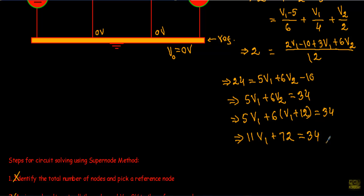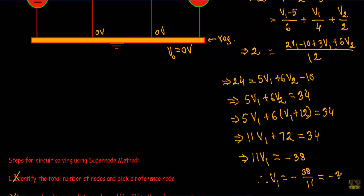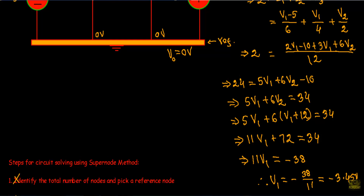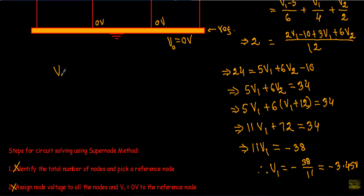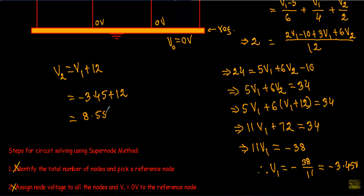Expanding: 5V1 plus 6V1 plus 72 equals 34, so 11V1 equals 34 minus 72 equals minus 38, giving V1 equals minus 38 divided by 11 equals minus 3.45 volts. From equation one, V2 equals V1 plus 12 equals minus 3.45 plus 12, so V2 equals 8.55 volts.